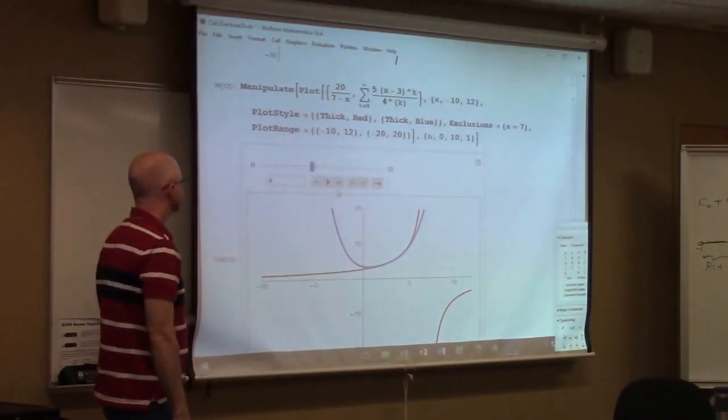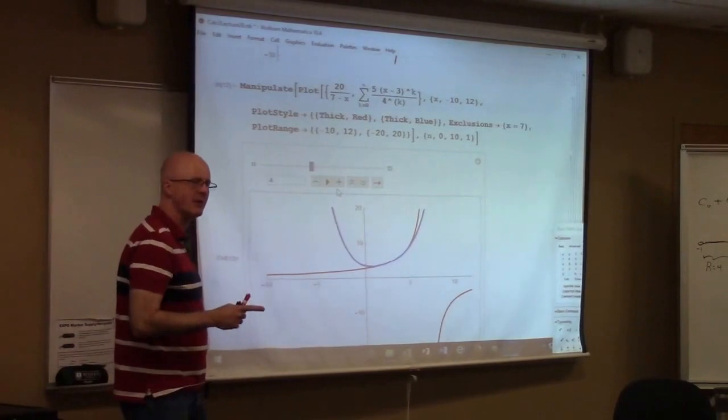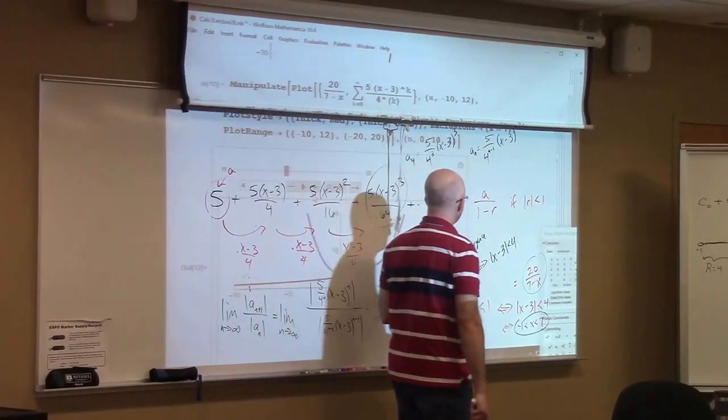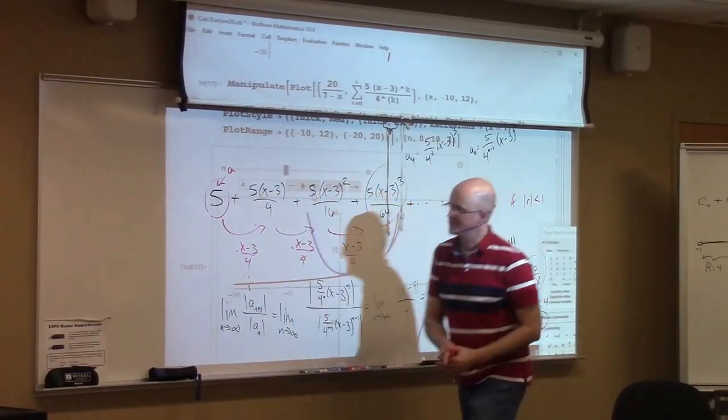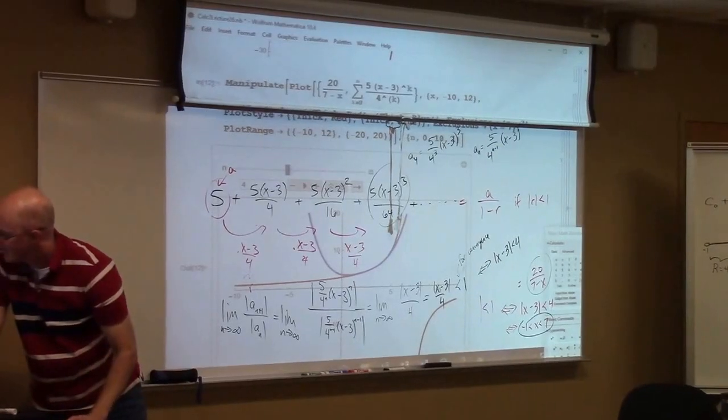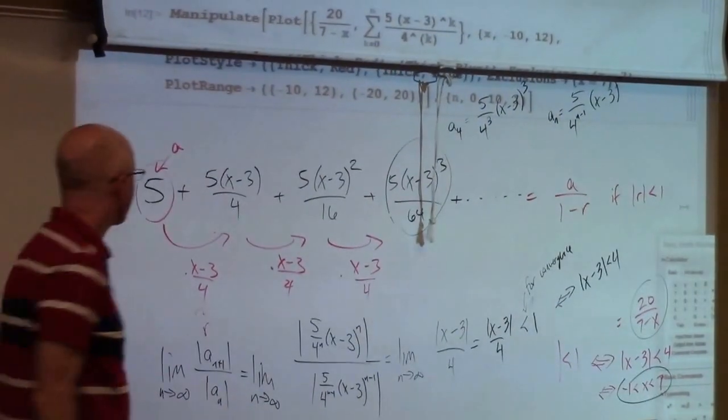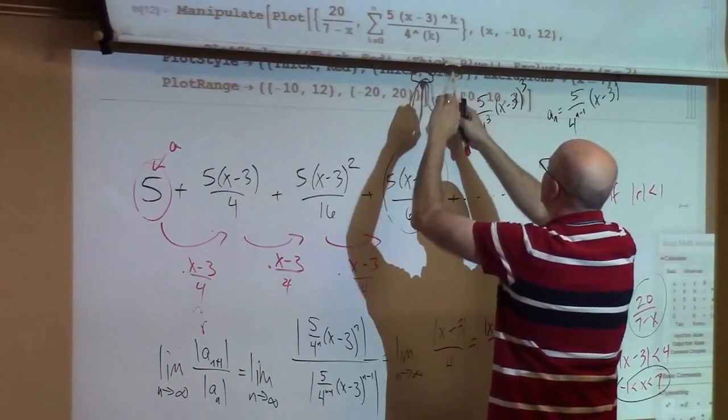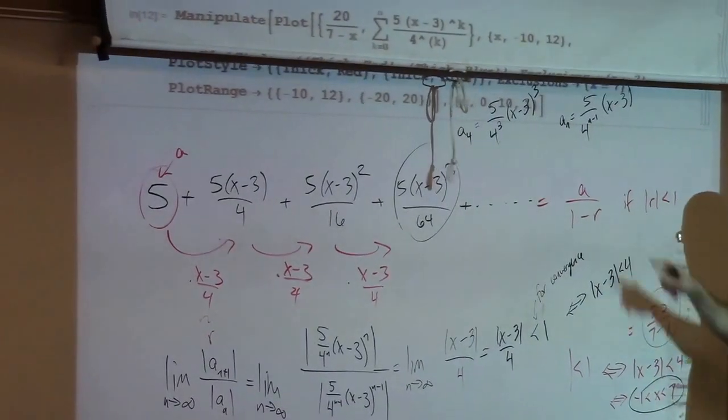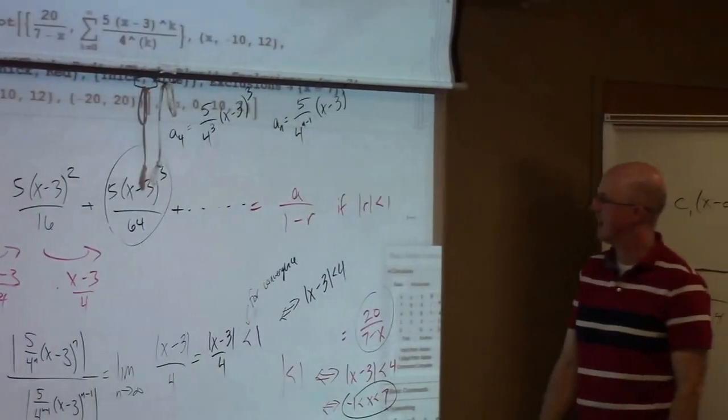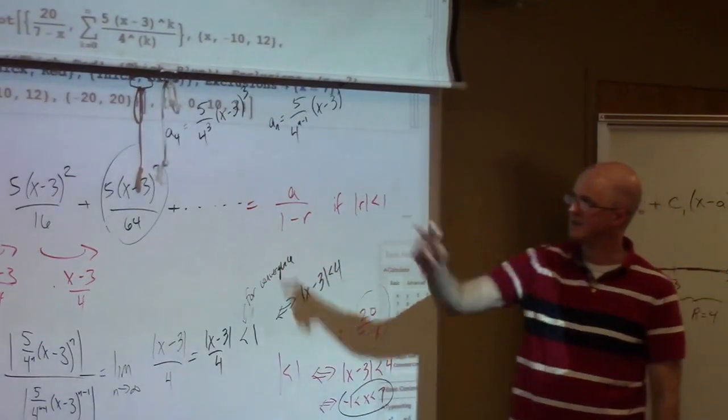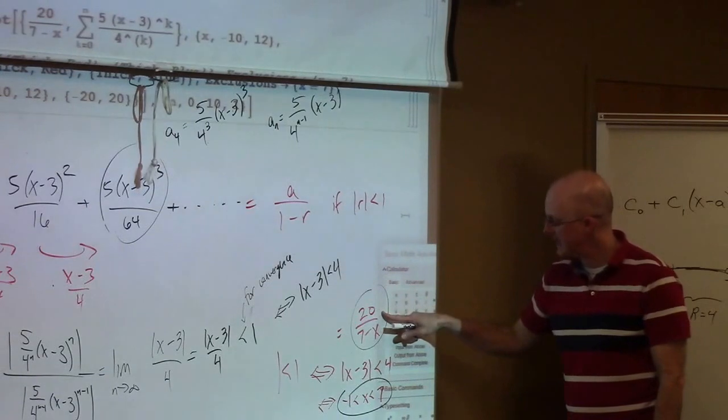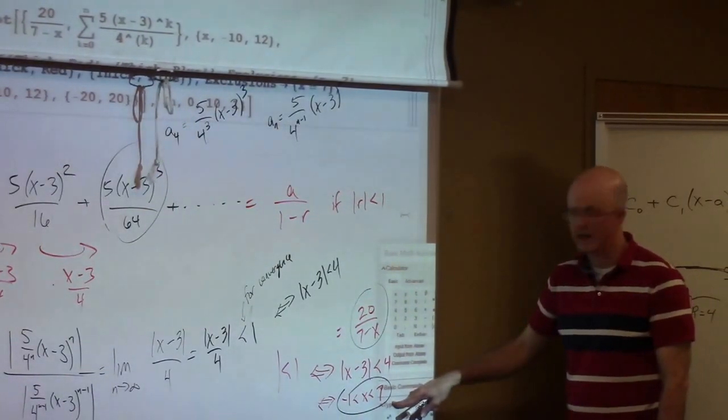Let's continue with this example, except that what I want to do is think about it in the opposite direction. So we started with this geometric series here, and said it's going to converge to the leading term over 1 minus the common ratio, if the absolute value of the common ratio is less than 1. We identified the leading term a and the common ratio x minus 3 over 4, used this formula to see that it's going to equal this expression as long as x is strictly between negative 1 and 7.